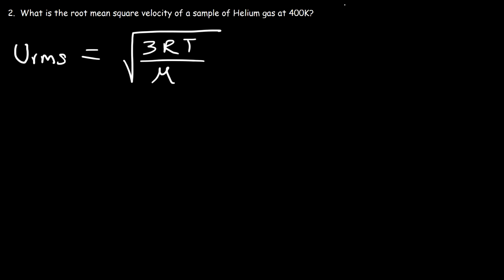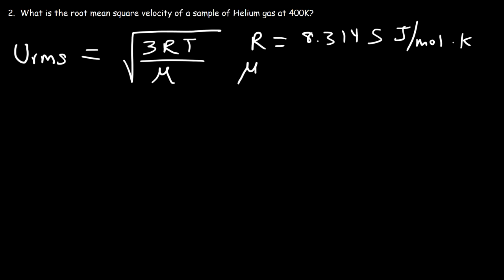There are some things you need to know. R, just like the last problem, is not 0.08206 — it's 8.3145 joules per mole per Kelvin. The temperature once again has to be in Kelvin. Now M is something you have to be very careful with. M represents the molar mass, but not in grams per mole — it must be in kilograms per mole. So watch out for that.